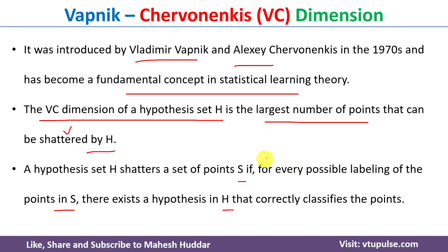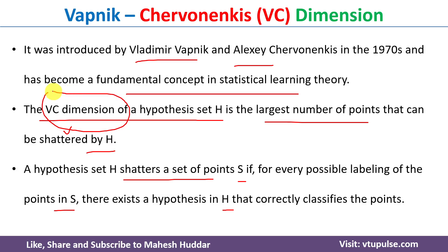Let us assume that we have two data points. These two data points can have different labelings — for example, both may be positive, one positive and one negative, or both may be negative. If there is a hypothesis in hypothesis space H which classifies all possible labelings correctly, then we say the classifier shatters the given data points, and the largest such number is the VC dimension.